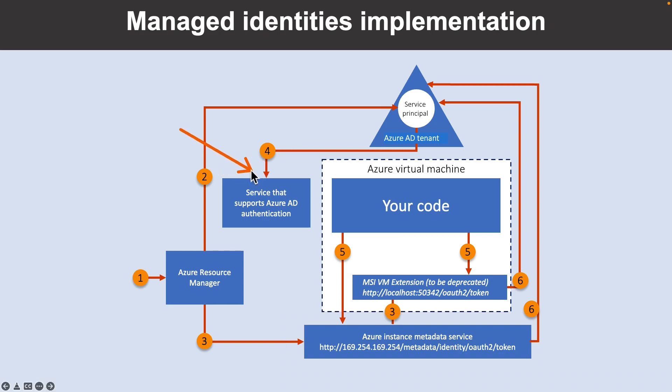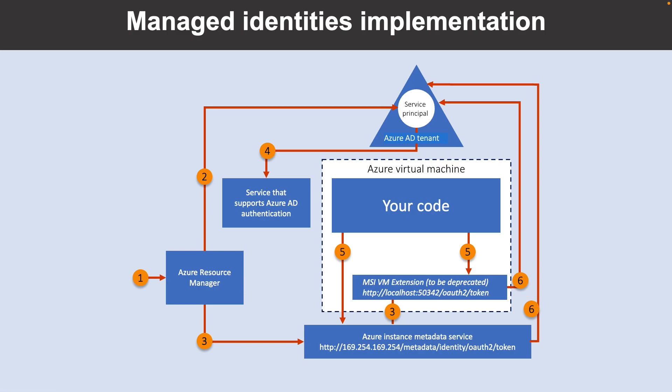After the VM has an identity, use the service principal information to grant the virtual machine access to Azure resources. To call Azure Resource Manager, use role-based access control in Azure AD to assign the appropriate role to the virtual machine service principal. Then your code running on the VM can request a token from endpoints accessible only from within the virtual machine. Your code makes a call to Azure AD to request an access token, and sends that access token on the call to a service that supports Azure AD authentication.